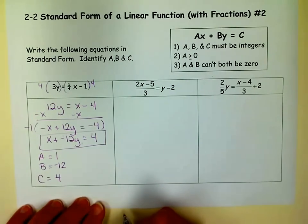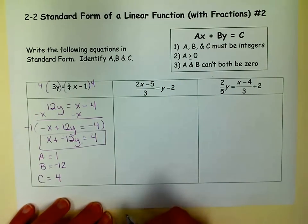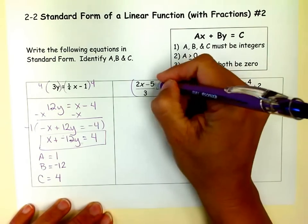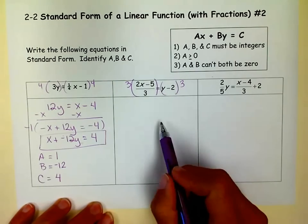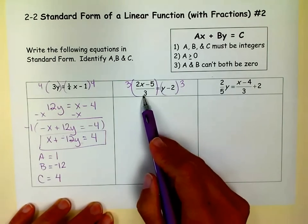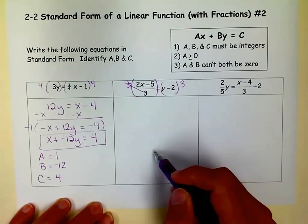So let's try the next one. And again, we have a fraction. To get rid of fractions, what do we do? We multiply by the common denominator. The common denominator, there is only one denominator here. So it is 3.